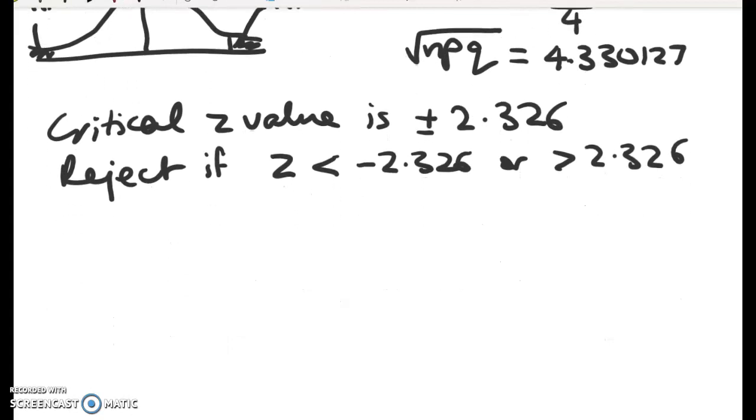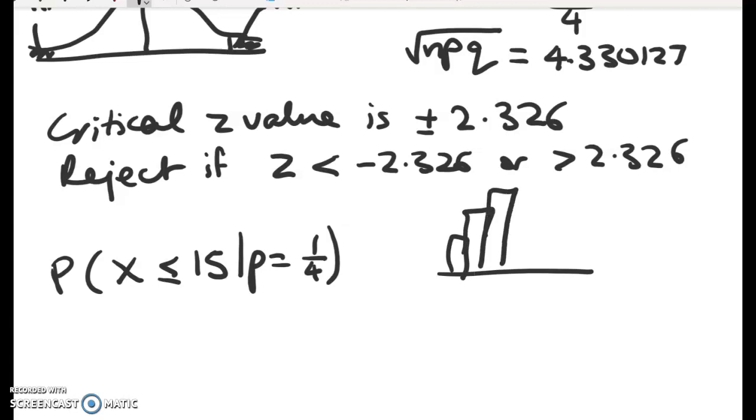So all we have to do now is to say, well, let's work out the probability of getting 15 or fewer goes into slot A if P is equal to 1 quarter. The thing to remember here is that we're working with an approximate distribution. The binomial distribution is discrete, right? So it's got bars. So we must do our continuity correction. We want to include the 15th value. So it's the probability of having less than or equal to 15.5 when P is equal to 1 quarter.